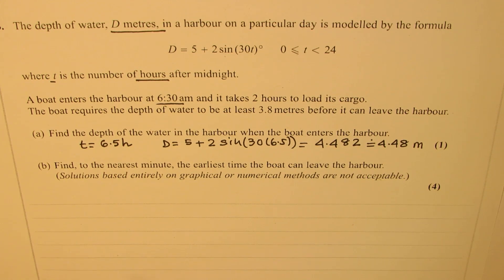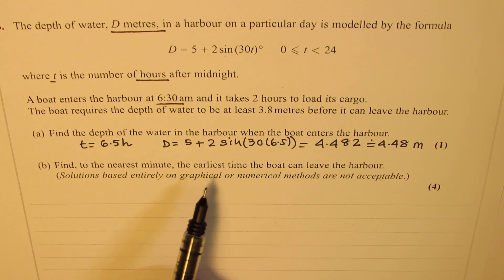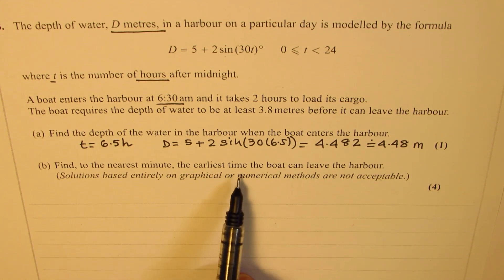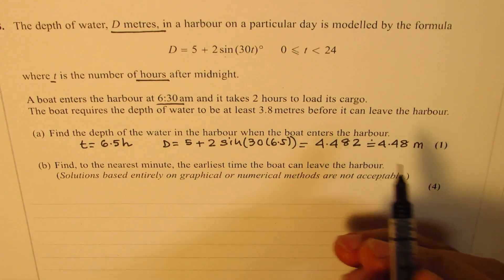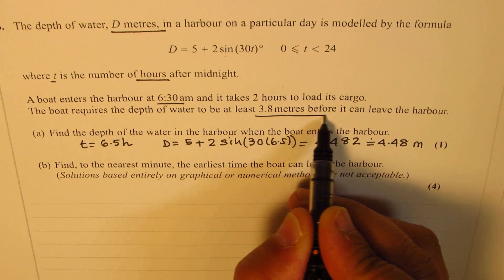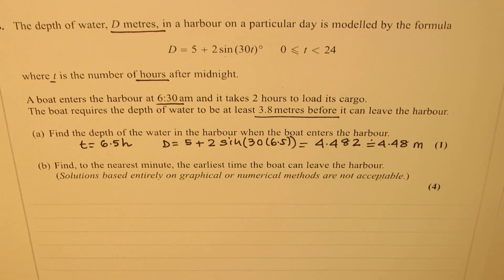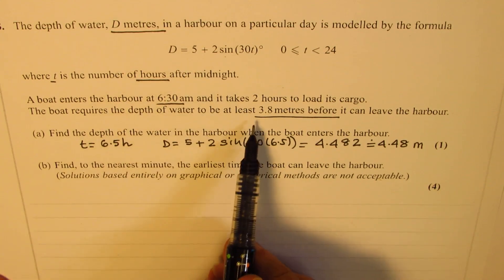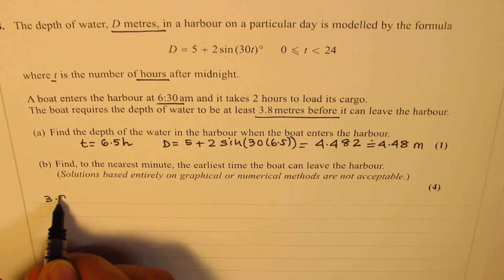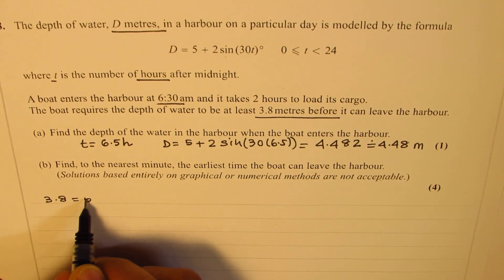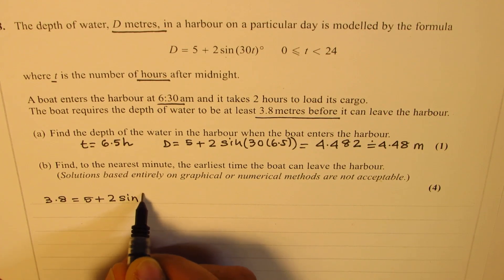Now part B is find to the nearest minute the earliest time when the boat can leave the harbor. It can leave the harbor if we have 3.8 meters. So basically we'll equate the depth to 3.8 meters and find the time. So now we can write 3.8 equals 5 plus 2 times sine of 30t.